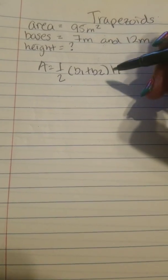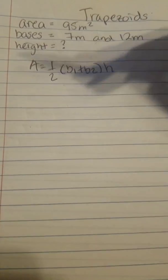A equals one half of base one plus base two times the height. We plug in all of the information that we know into the formula and then we just work backwards.